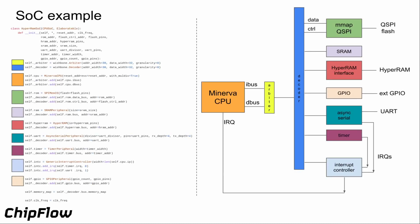Here's an example of what the MPW3 SoC looked like. The key components are the Minerva CPU, the Arbiter which combines the instruction and data bus into a single shared bus, and a decoder which fans that bus out to the various peripherals — the memory-mapped quad SPI flash, the SRAM, the external HyperRAM interface, GPIO, asynchronous serial UART, and a timer. Both the serial and timer can produce interrupts going into the interrupt controller. On the left is the code that glues all those components together — a whole microcontroller-class SoC in roughly a page of code.